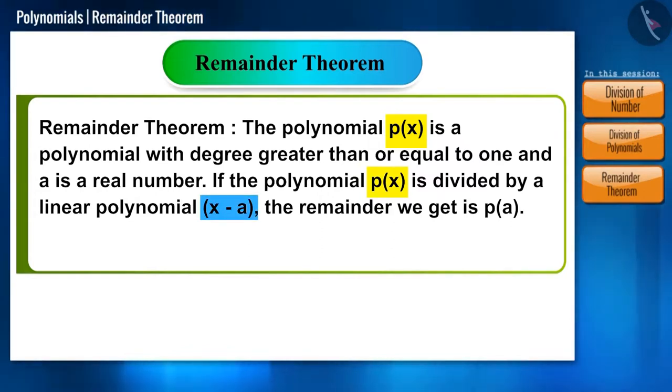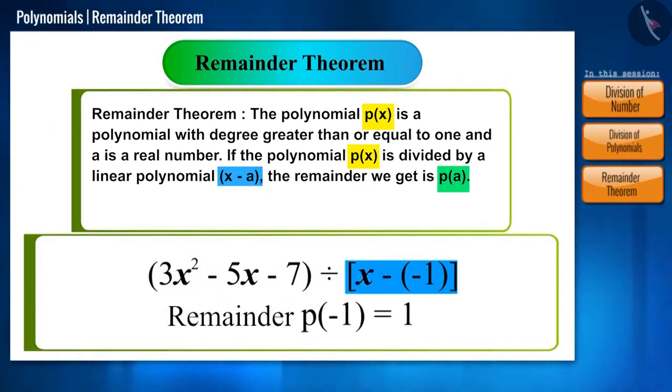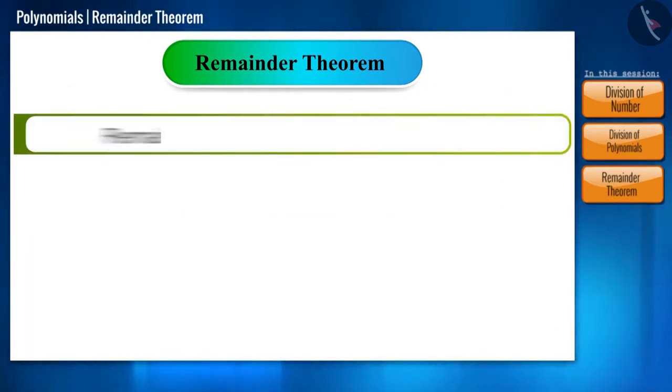Let's compare this with our previous example where we divided the polynomial 3x squared minus 5x minus 7 by a linear polynomial x minus minus 1, and we got the remainder p of minus 1 equals 1.